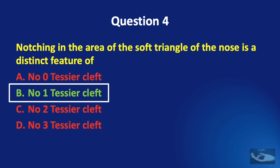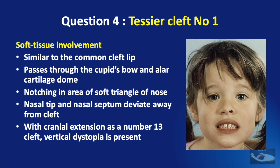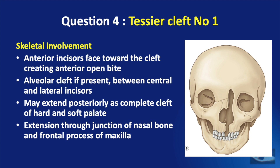The correct answer is No. 1 Tessier cleft. The soft tissue involvement in Tessier cleft No. 1 is very similar to the common cleft lip. It passes through the cupid's bow and lower lateral cartilage dome. Notching in the area of the soft triangle of the nose is very characteristic. The nasal tip and nasal septum deviate away from the cleft. With cranial extension as a No. 13 cleft, vertical dystopia is present. In skeletal involvement, the anterior incisors face toward the cleft, creating anterior open bite. An alveolar cleft is between the central and lateral incisors, and it may extend posteriorly as a complete cleft of the hard and soft palates. The cephalad extension is through the junction of the nasal bone and frontal process of the maxilla.